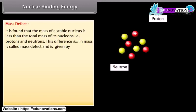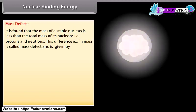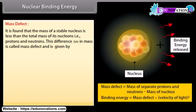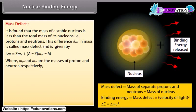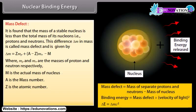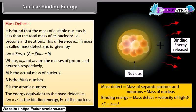Nuclear binding energy: Mass defect — it is found that the mass of a stable nucleus is less than the total mass of its nucleons, that is protons and neutrons. This difference ΔM in mass is called mass defect and is given by ΔM = Z·M_p + (A−Z)·M_n − M, where M_p and M_n are the masses of proton and neutron respectively, M is the actual mass of the nucleus, A is the mass number, and Z is the atomic number. The energy equivalent to the mass defect, ΔM·c², is the binding energy E_b of the nucleus.